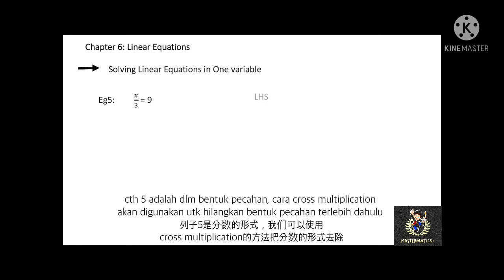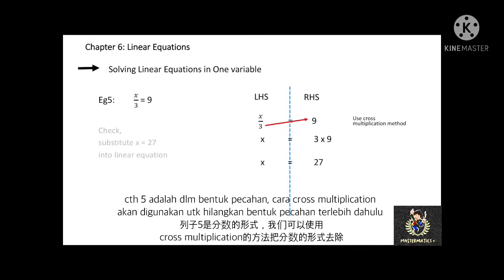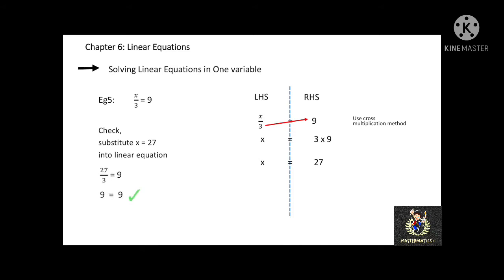In example 5, x over 3 equal to 9. The x over 3 is in fractional form. Therefore, I will use the cross multiplication method to solve this linear equation. The denominator 3 on the left-hand side will multiply with 9 on the right-hand side, which gives x equal to 3 multiplied by 9.